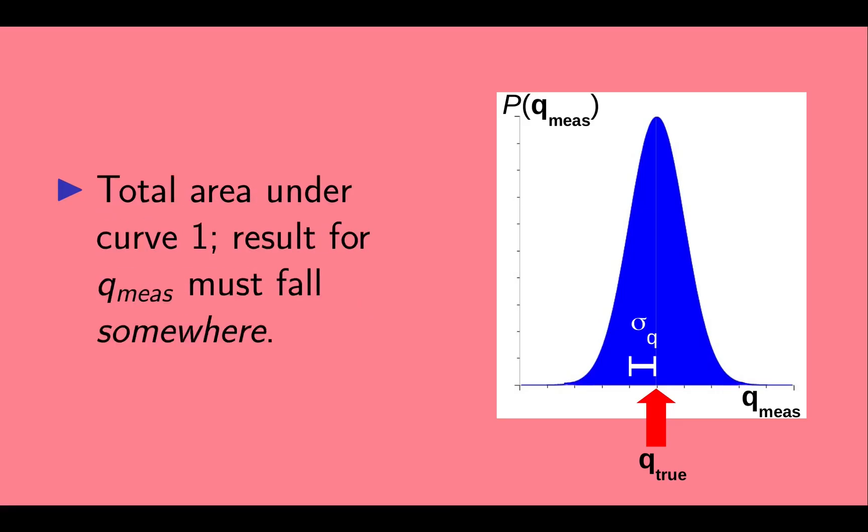As we said, the total area under the curve is one. This is reflective of the fact that the probability of q measured taking on some value between minus infinity and infinity is 100%. Q measured must fall somewhere.